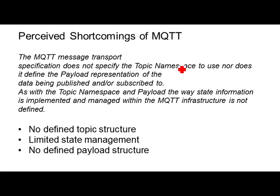So why Sparkplug? There are a couple of perceived shortcomings in the MQTT protocol — and they are actually shortcomings, but also advantages. The protocol doesn't specify the topic namespace, so there's no structure for the topic, which is incredibly flexible and has made MQTT very popular. There's limited state management — you know when a sensor or device has gone down, but you don't actually know when it's online. And there's no defined payload structure. These are perceived limitations, but they also work to the advantage, making MQTT very flexible. The idea of Sparkplug is to fix these perceived shortcomings.